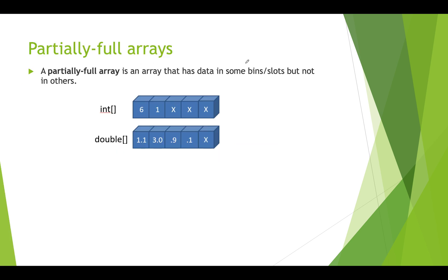A partially filled array is one that has some data in some of the bins or slots, but not in all of them. In this picture we see a partially filled int array with a six in the first slot and a one in the second slot, with no real data in the other slots. Similarly, this double array has numbers in the first four slots but nothing in the last slot.